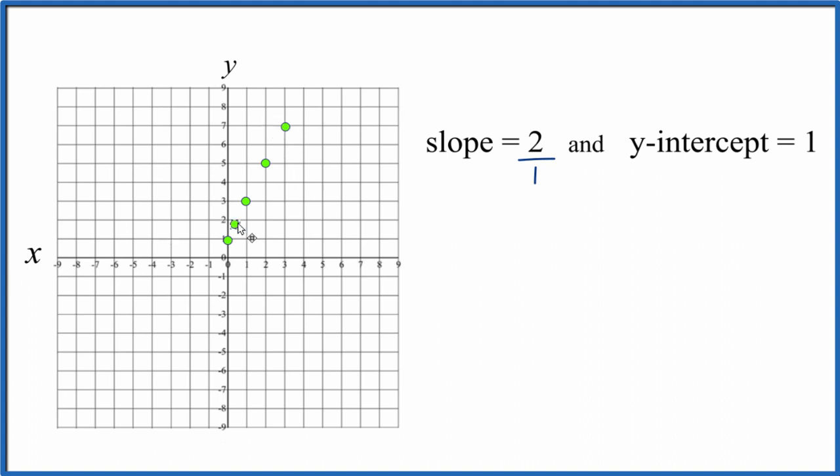And we can even go in the opposite direction. Down 1, 2 and over to the left 1. Let's put a line through that. We'll put arrows to show that the line goes to infinity. And that's the graph when we have a slope of 2 and a y-intercept of 1.